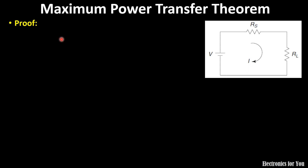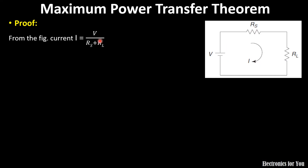Now let us see the proof regarding the maximum power transfer theorem. First, we have to calculate the current flowing through this network. The current I equals, by using Ohm's law, V upon R. Since the two resistances are in series, the total resistance will be RS plus RL. So the current I equals V upon RS plus RL.